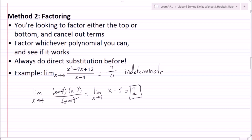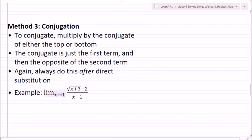So that's the factoring method. If you get an indeterminate form and you can't factor it, you should try conjugation. To conjugate, multiply by the conjugate of either the top or the bottom — the conjugate is just the first term and the opposite sign of the second term — and put that over itself so it equals one. Always do this after direct substitution.